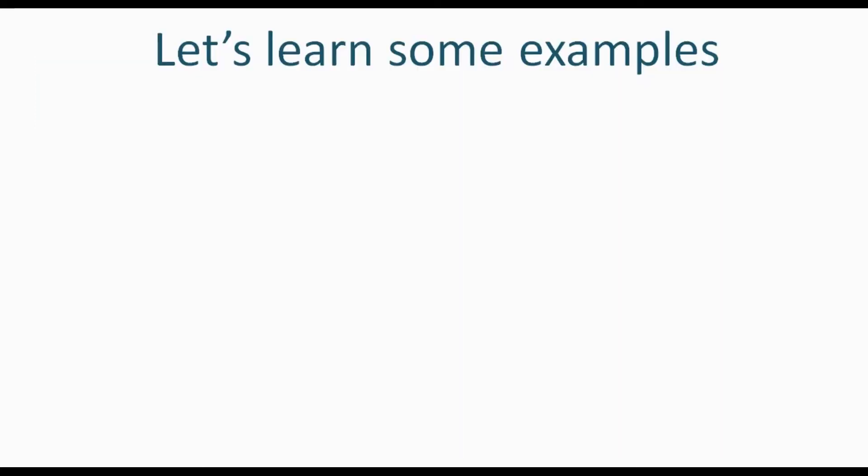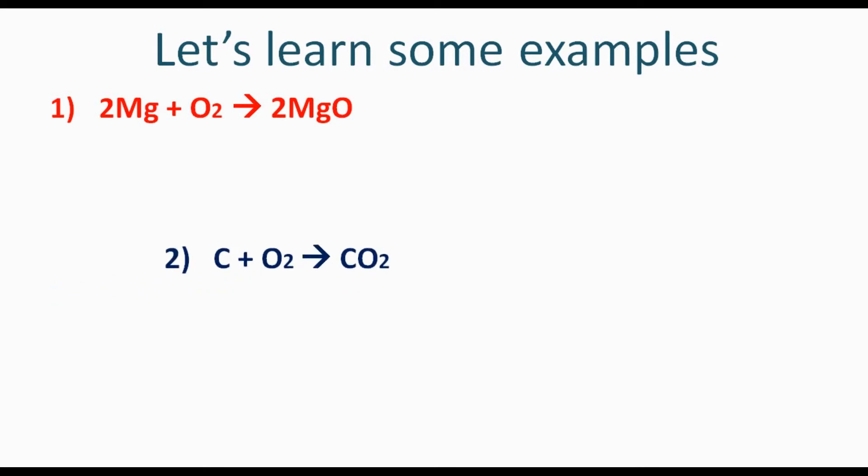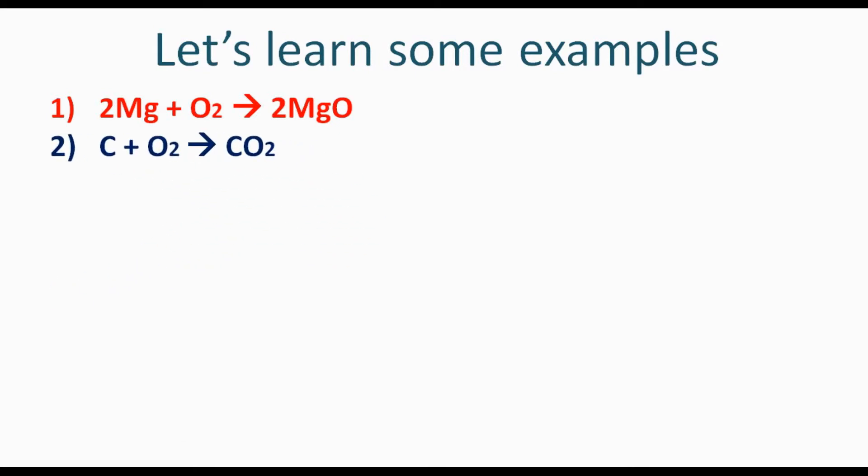Now pay attention because the trick is coming from these examples. First example: 2Mg + O2 → 2MgO. Here Mg and O2 are reactants that combine to form 2MgO, so it is an oxidation reaction. Second example: C + O2 → CO2. Here carbon and oxygen combine to form CO2, so it is also an example of oxidation reaction.